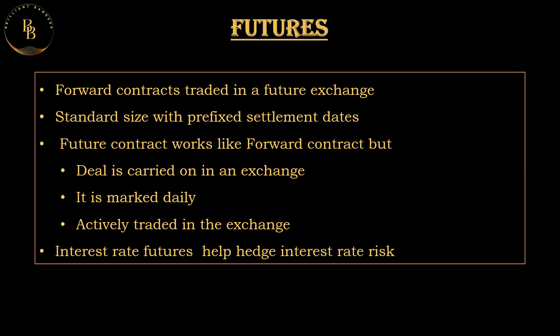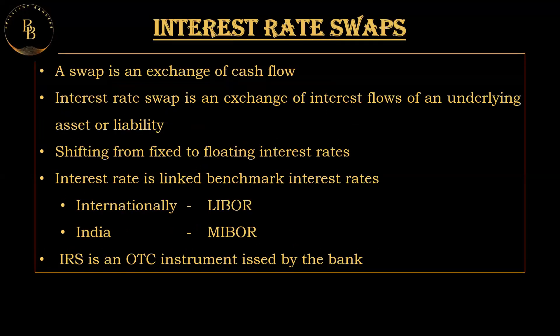There are two types of swaps: interest rate swaps and currency swaps. An interest rate swap is a financial derivative in which two parties agree to exchange interest rate cash flows over a specific period. These swaps are often used by businesses and investors to manage or optimize their exposure to interest rate fluctuations. The key components of an interest rate swap include two parties entering into an agreement.